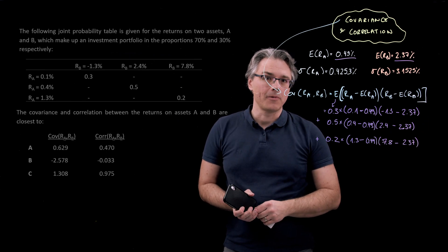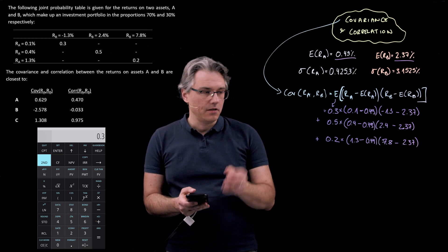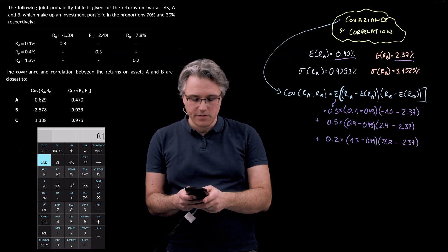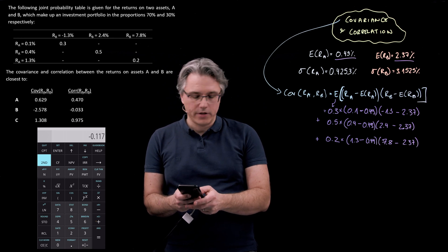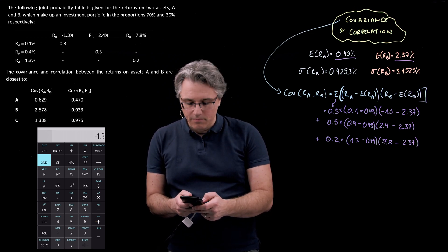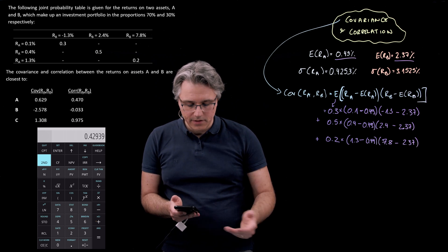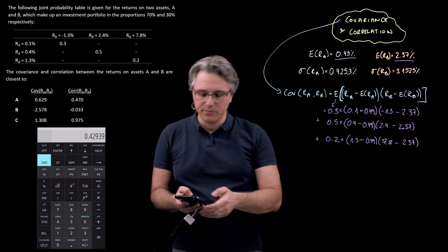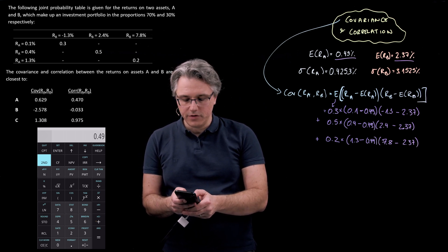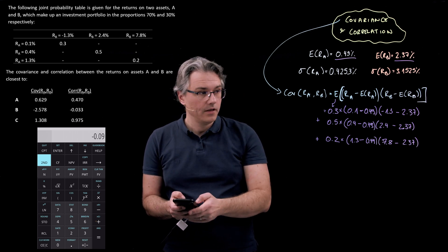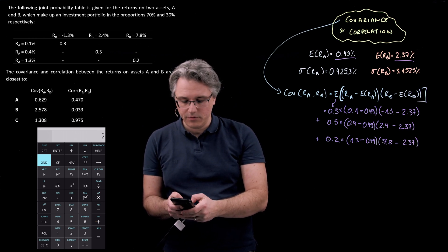Let's have a go on the calculator. Let's see if we can do this simply in one go. So 0.3 multiplied by, open bracket, 0.1 minus 0.49, close bracket, and this is still multiplied by, open bracket, -1.3 minus 2.37, close bracket. Now I'm going to hit the plus sign to begin the next row of computations. 0.5 times, open bracket, 0.4 minus 0.49, close the bracket, and multiplied by, open bracket, 2.4 minus 2.37, close bracket.